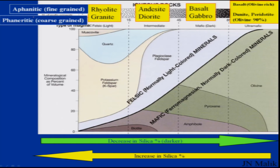Intrusive rocks are coarse-grained because cooling of magma is slow, while extrusive rocks cool faster and are fine-grained. So rhyolite, andesite, basalt and similar rocks listed are extrusive, whereas granite, diorite, gabbro, and other phaneritic coarse-grained rocks are intrusive.